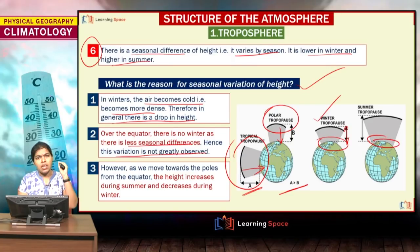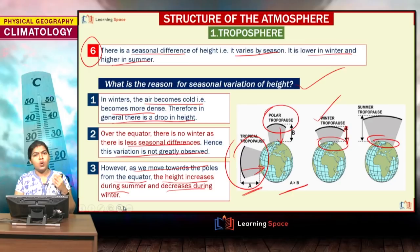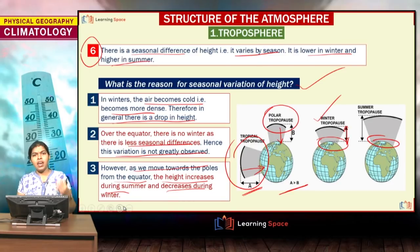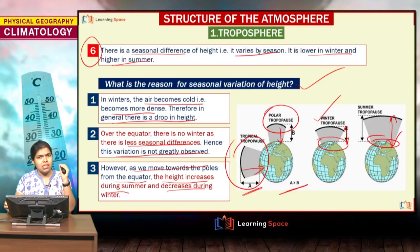This seasonal variation relates more to the poles. As we move towards the poles from the equator, height increases during summer and decreases during winter. During winter, air becomes dense and sinks. During summer, even around the poles there is a slight increase in temperature, the air becomes less dense, and there is an expansion of the atmosphere, giving us the seasonal differences of the troposphere and tropopause.